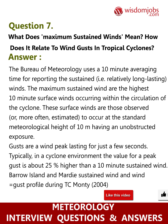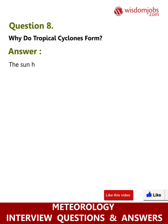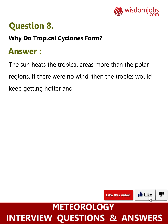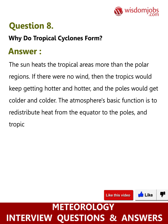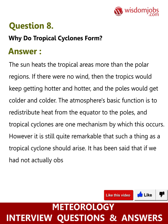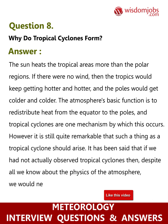Question 8: Why do tropical cyclones form? The sun heats tropical areas more than the polar regions. If there were no wind, the tropics would keep getting hotter and hotter and the poles colder and colder. The atmosphere's basic function is to redistribute heat from the equator to the poles, and tropical cyclones are one mechanism by which this occurs. It has been said that if we had not actually observed tropical cyclones, then despite all we know about the physics of the atmosphere, we would never have guessed at their existence.